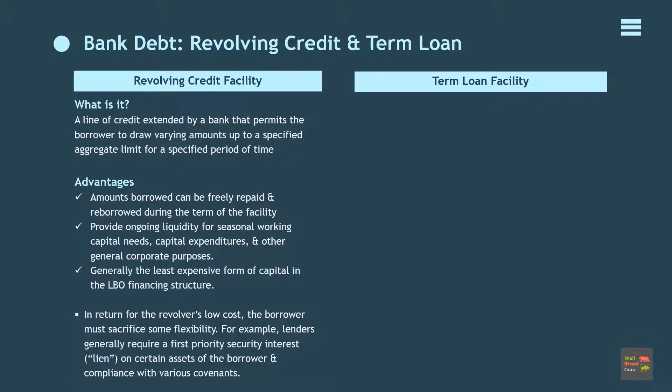The revolver is generally the least expensive form of capital in the LBO financing structure, typically priced at or slightly below the term loan's spread. In return for the revolver's low cost, the borrower must sacrifice some flexibility. For example, lenders generally require a first priority security interest lien on certain assets of the borrower and compliance with various covenants.